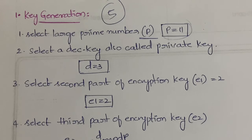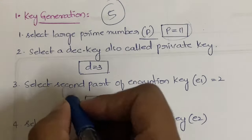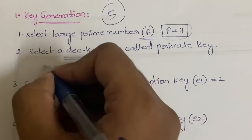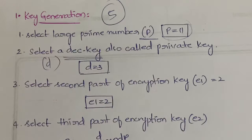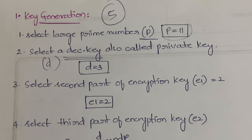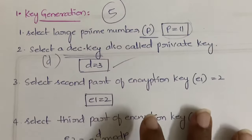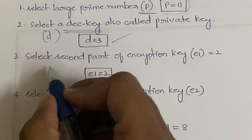In the second step, you need to select the decryption key, denoted by d, which is also called the private key. You select it yourself. We have selected d = 3.